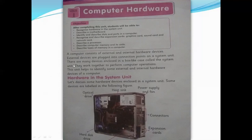A computer consists of external and internal hardware devices. External devices are plugged into connection points on a system unit. There are many devices enclosed in a box-like case called the system unit. They work together to perform computer operations. This unit will help us identify some external and internal hardware devices of a computer.